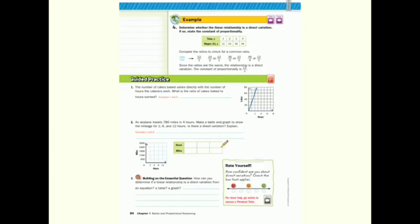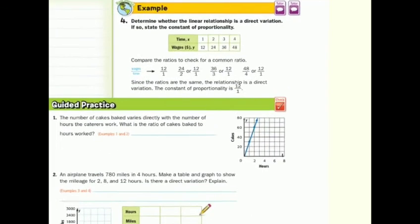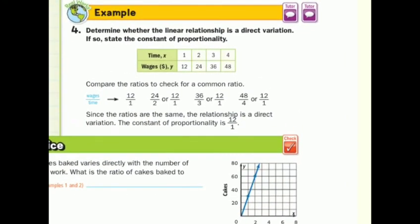Got it? Example 4 does not have a got it question attached. Let's be sure to pay attention here. Determine whether the linear relationship is a direct variation. If so, state the constant of proportionality. Very similar to what we did in saying our $4.20 over 1, $8.40 over 2, $12.60 over 3, and $16.80 over 4, they compared the y over x again. The $12 over 1, $24 over 2, $36 over 3, $48 over 4, and those all simplify into $12 over 1. And again, since the ratios are the same, the relationship is a direct variation, and the constant of proportionality is 12 over 1.